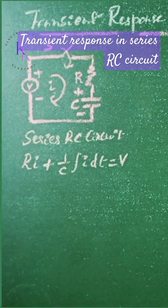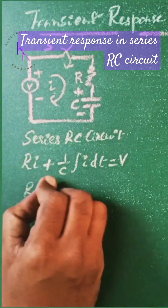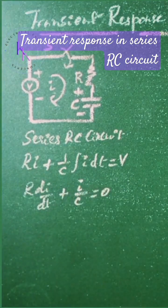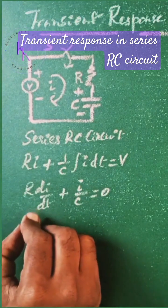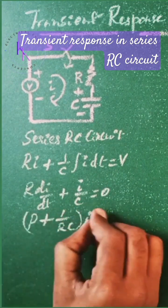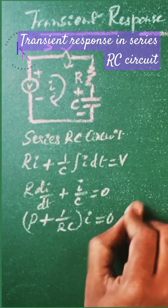Differentiating this equation we get R di by dt plus I by C equals 0. This can be written as P plus 1 by RC times I equals 0. That is equation 1.